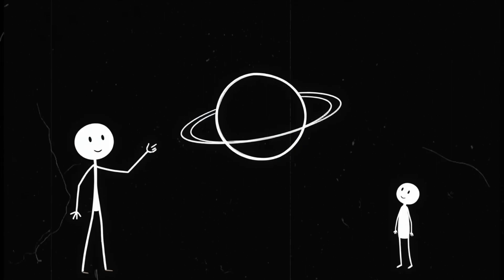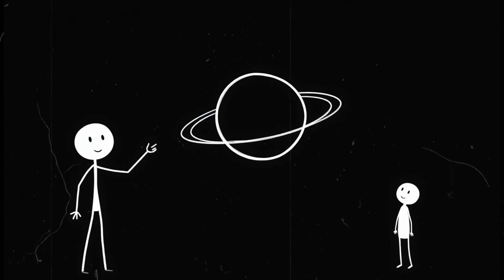Instead of a giant moon in the sky, we'd get a ring system like Saturn. It would look stunning. Until all that debris started raining down on Earth, triggering global destruction.